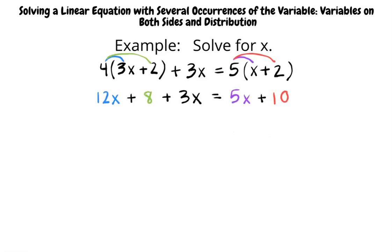After we distribute, we will get 12x plus 8 plus 3x equals 5x plus 10. The left side has two like terms, so we combine them and write 15x plus 8 equals 5x plus 10.